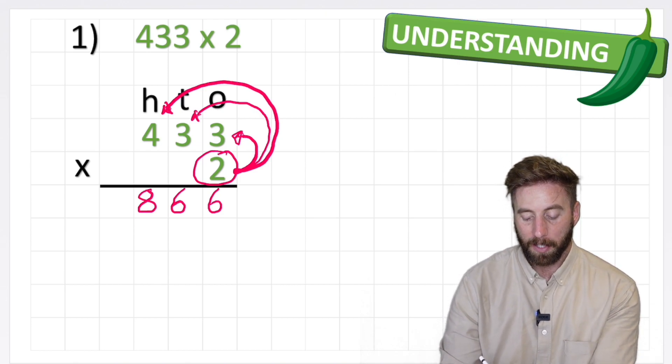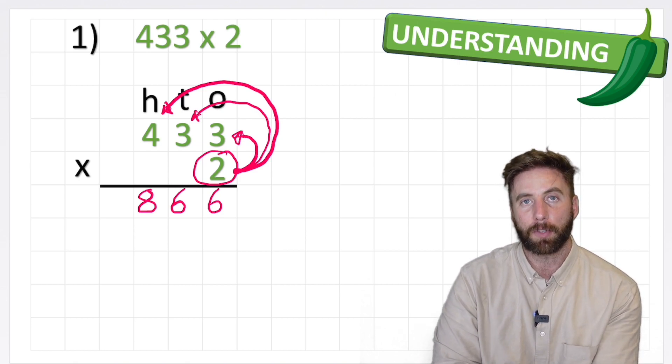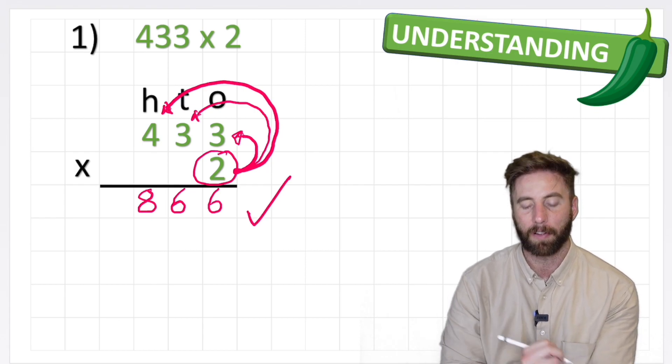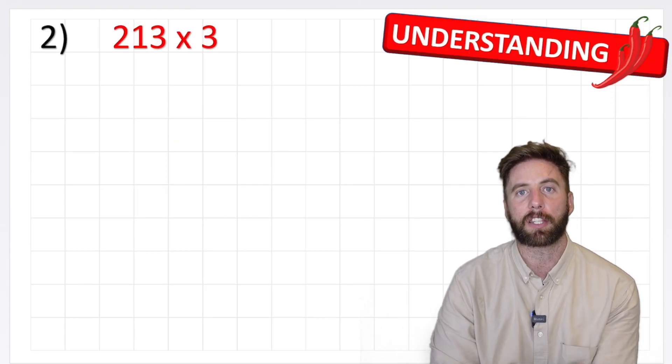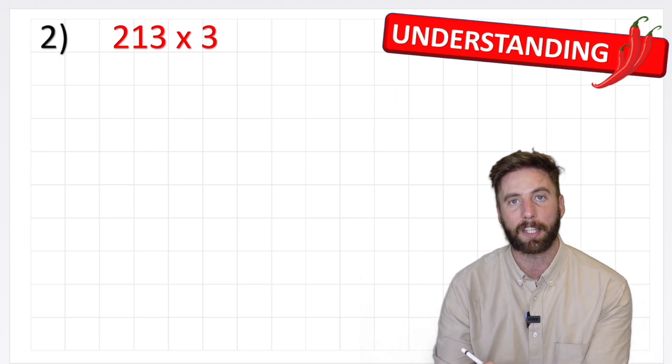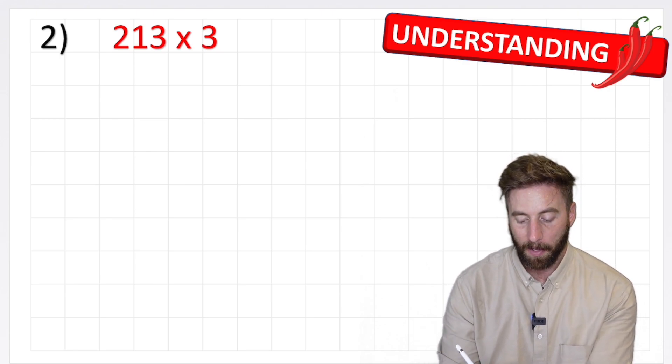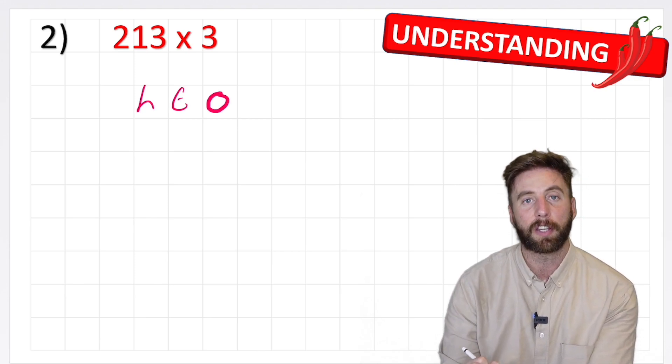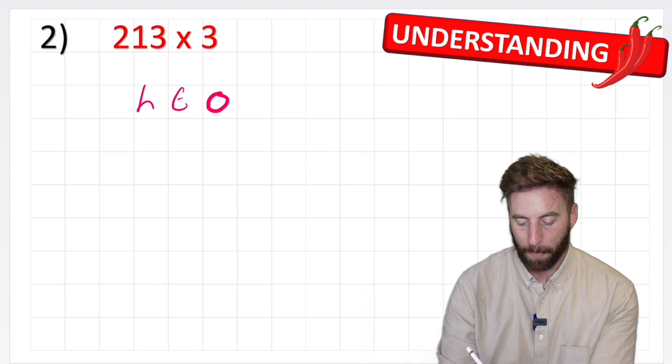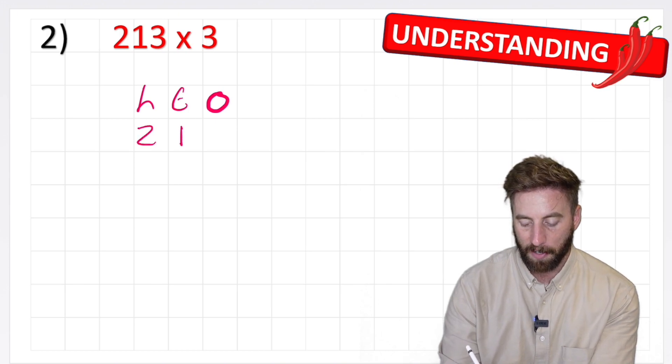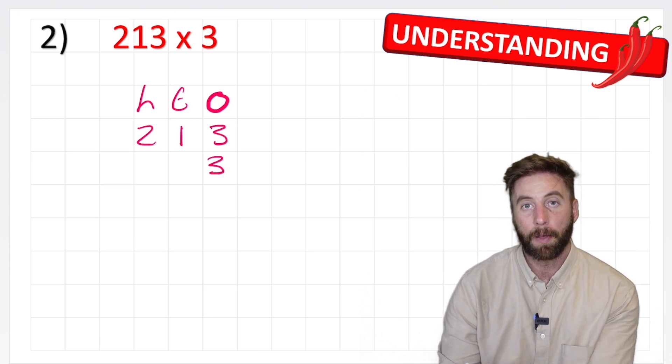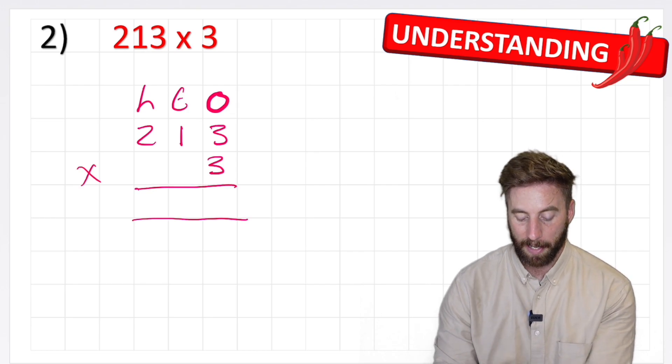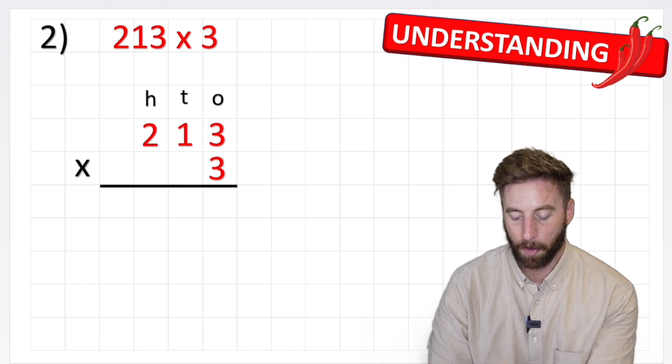Simple. So my answer to 433 times 2 is 866. I had to give myself a nice big tick. Let's look at a slightly harder one. Let's have a look at 213 times 3. So I'm going to do the same thing. Put my ones, tens, and hundreds. Now I can put the numbers in the right place. 213 times 3. Put my equal line and I'm ready to begin again.